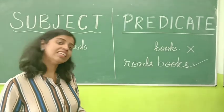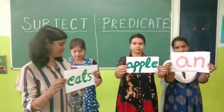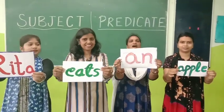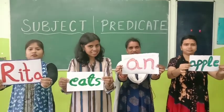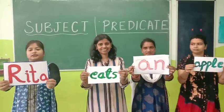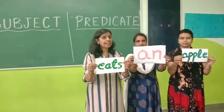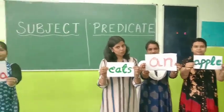Let's understand with another example. We have to arrange these words to make a meaningful sentence: Rita eats an apple. Now children, which one is the subject? Rita is the subject. And 'eats an apple' — this one is the predicate.